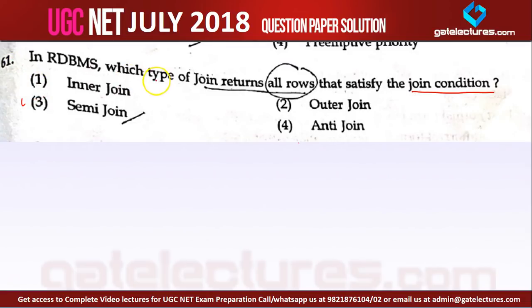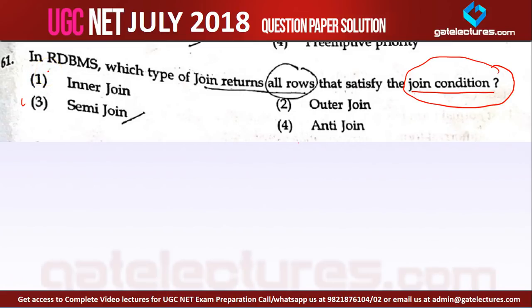Question number 61. In RDBMS, which type of join returns all rows that satisfy the join condition? Inner join is simply the normal join operation, that is natural join operation, in which you have a condition on the similar attribute which is in both the tables you are joining. Inner join is done on the basis of common attributes in both tables, and when the values are matching of the same attribute, we take them in the result.